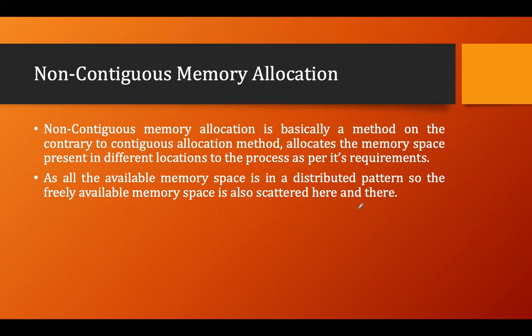In contiguous memory allocation, I need a contiguous block of free memory to accommodate all processes at once. Non-contiguous memory allocation helps accommodate those processes even when contiguous space isn't available. This is the key idea behind contiguous and non-contiguous memory allocation.